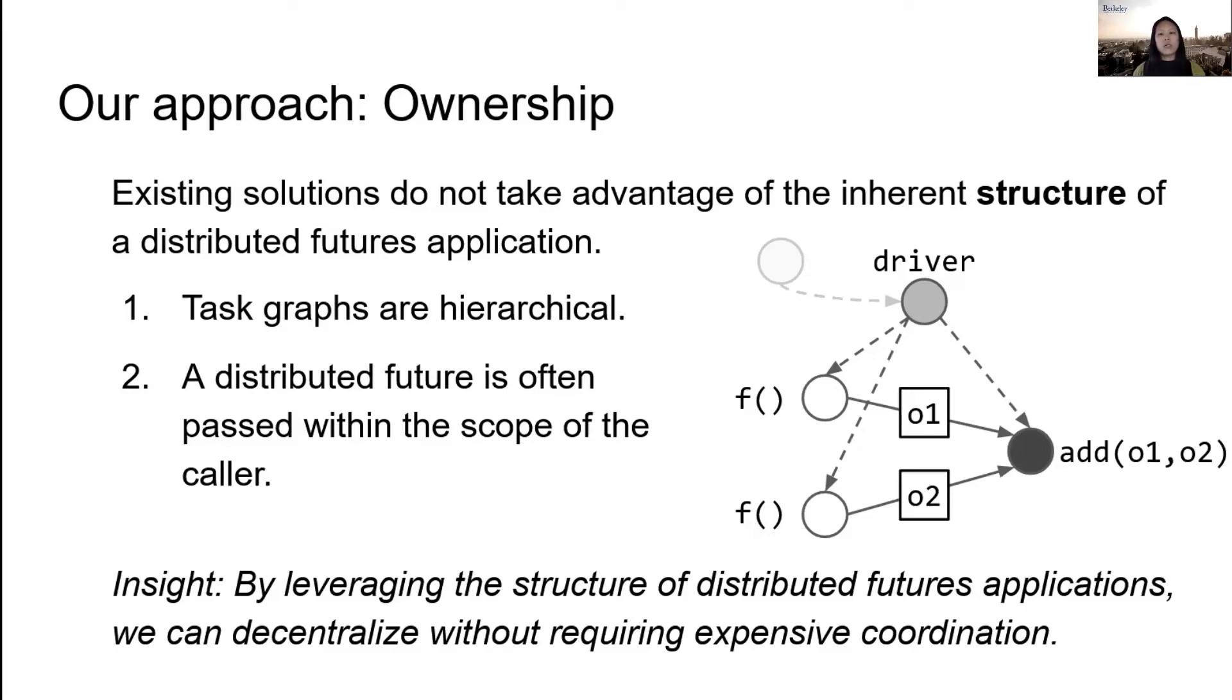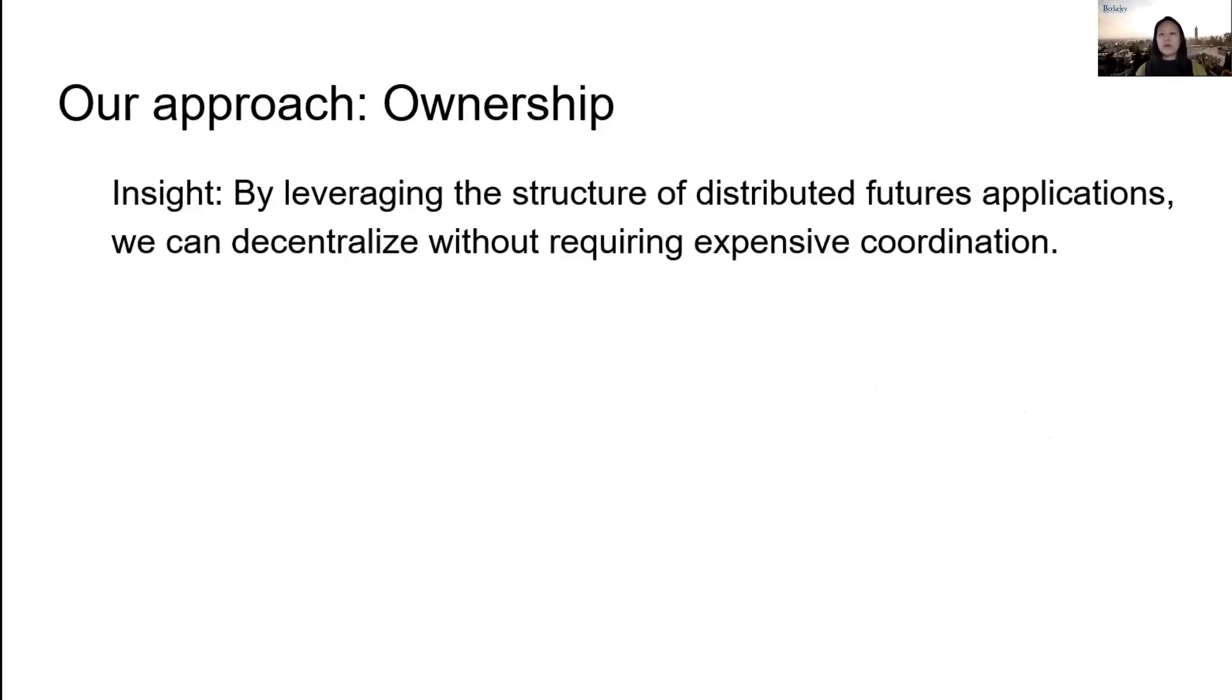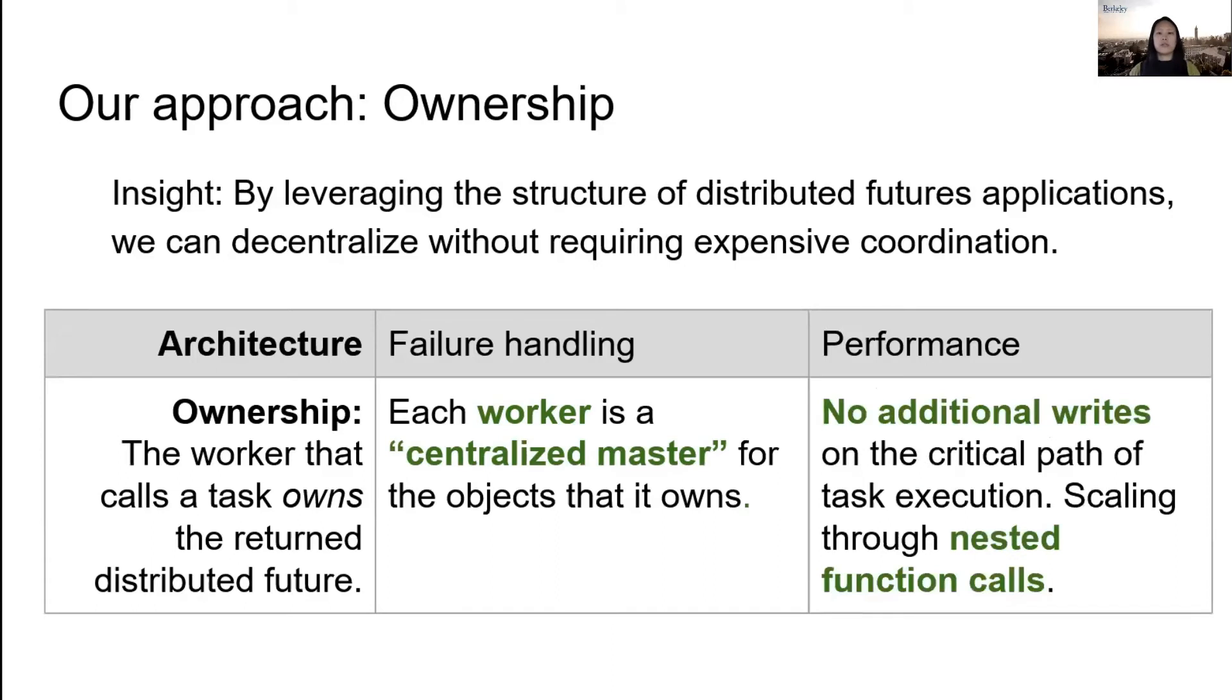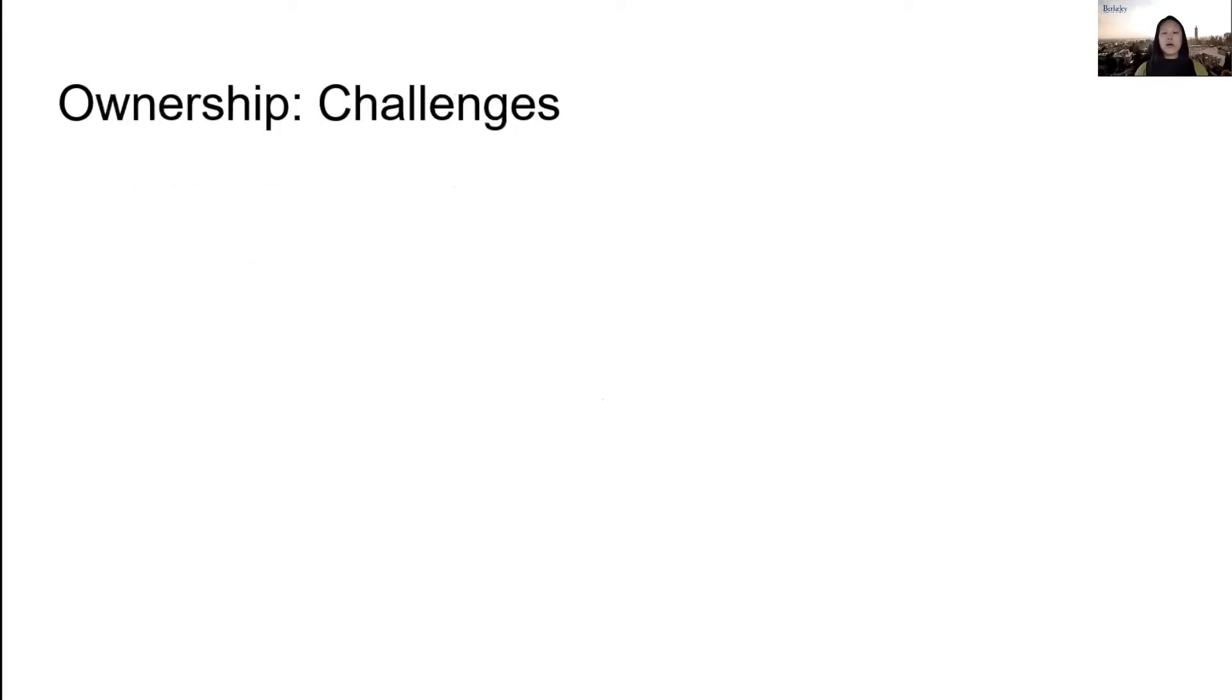In contrast, a centralized master takes the extreme approach of centralizing all system state in one place, no matter which worker created it or which worker will need it in the future. So the idea behind ownership is to instead shard the master across the workers, which are the processes that actually create and share distributed futures. When a worker invokes a task, it owns the return distributed future and essentially acts as a master for just that object. But unlike a centralized master, the runtime overhead is low because we keep all of the metadata local to the worker that's most likely to use that distributed future. We can also scale the system by using nested function calls in the application instead of sharding the master with an application-agnostic approach like consistent hashing. Of course, the main challenge is in keeping the system operations as simple as if there were only one master. These operations include failure recovery, especially if an owner dies, memory safety, and handling first-class distributed futures.